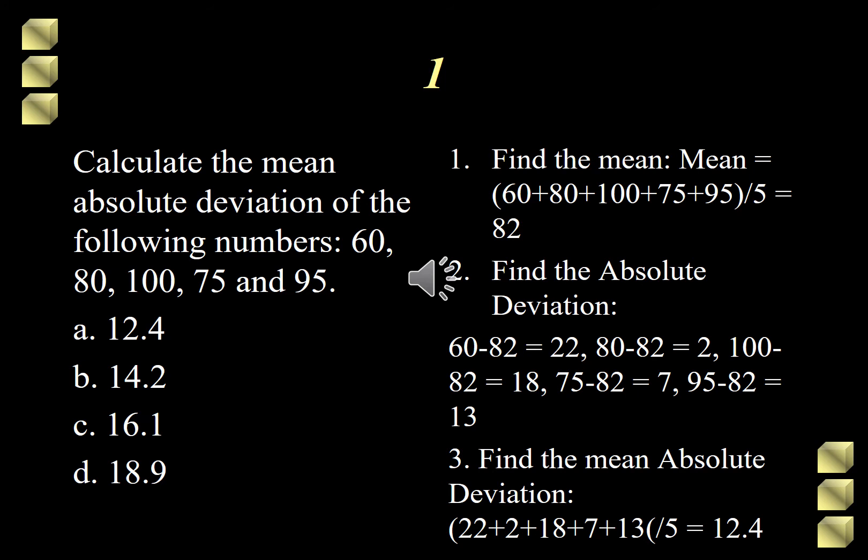Now our third step is to get the mean of this deviation. So 22 plus 2 plus 18 plus 7 plus 13 divided by 5. The answer is 12.4. The correct answer, therefore, is letter A, 12.4.